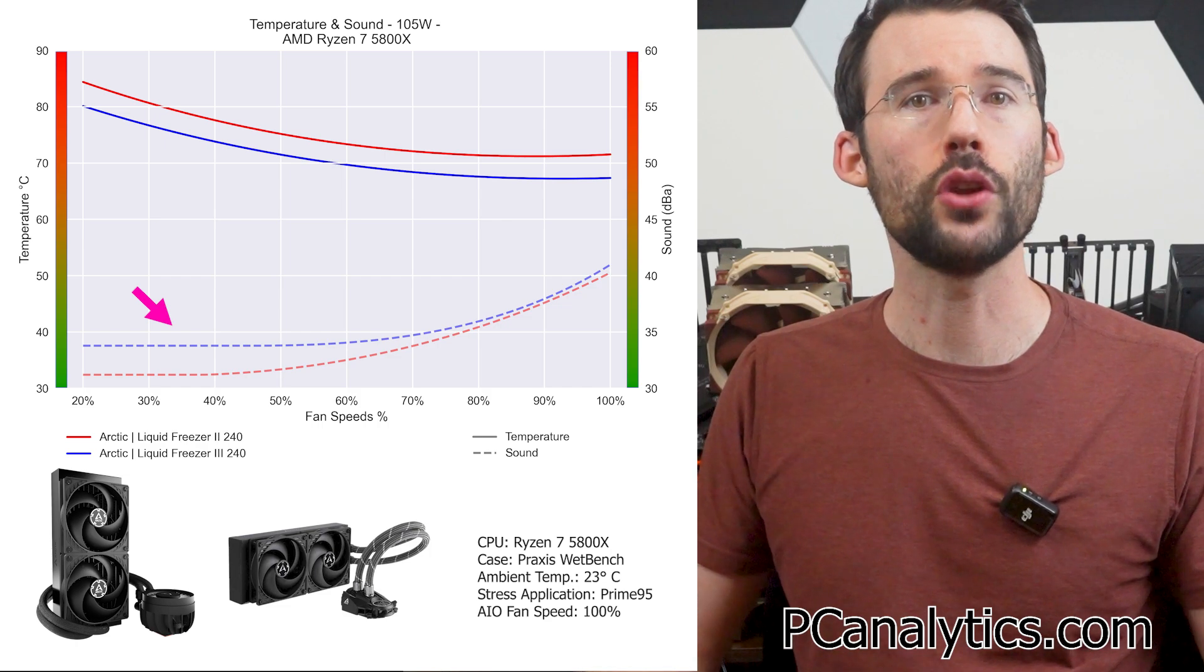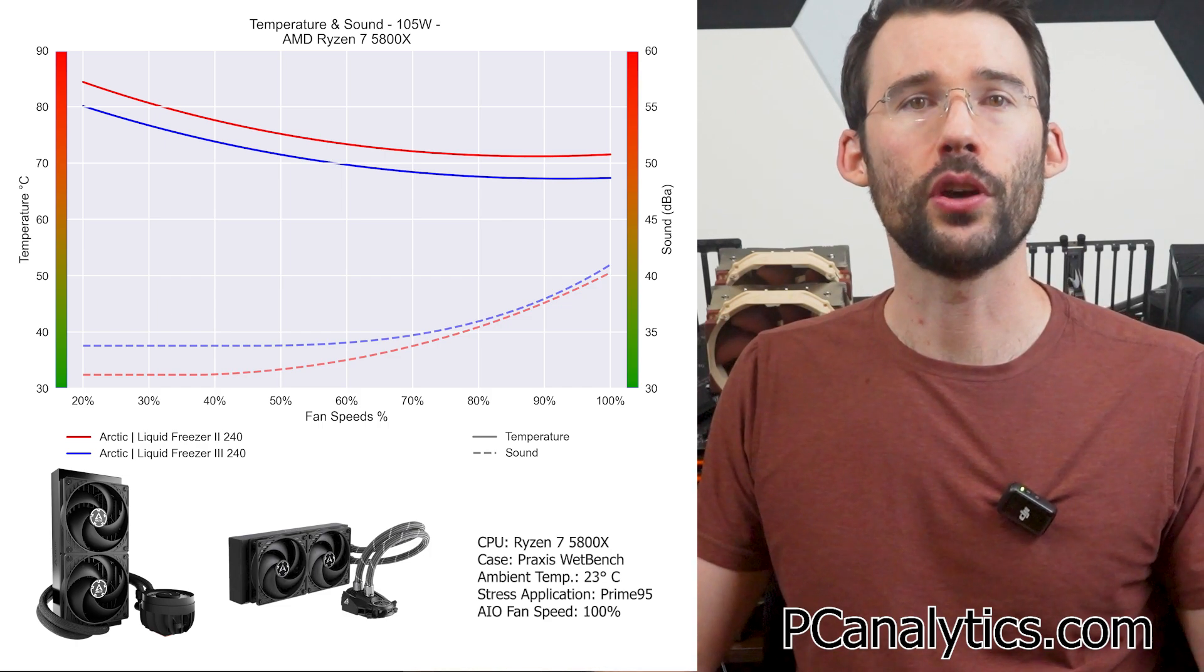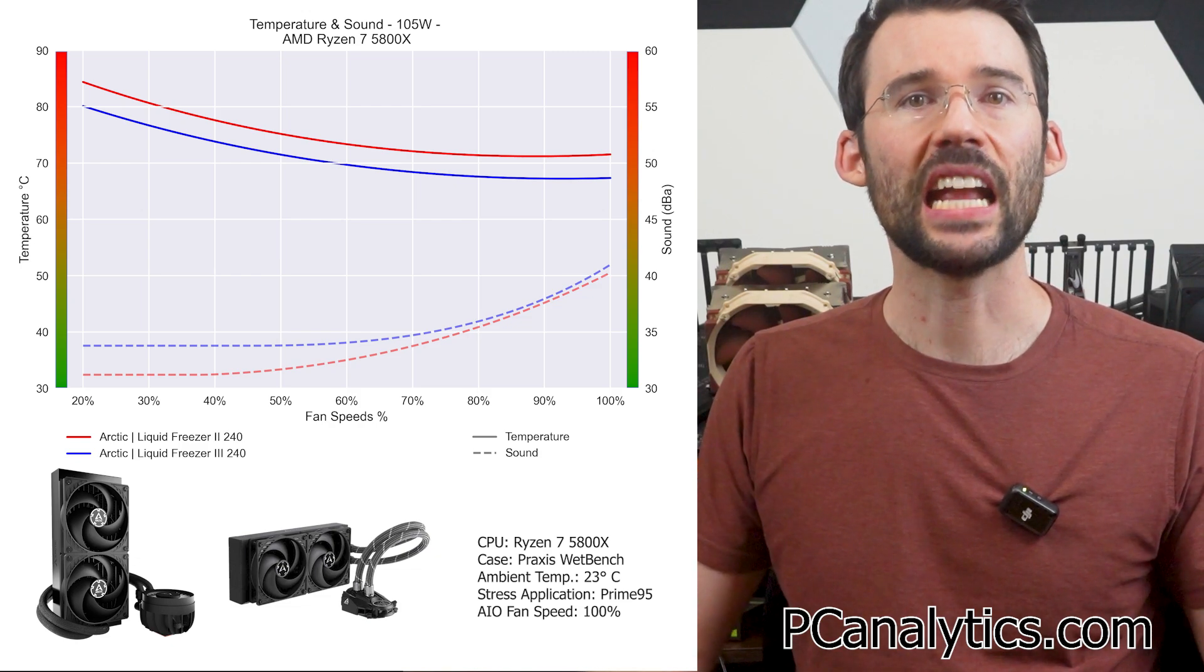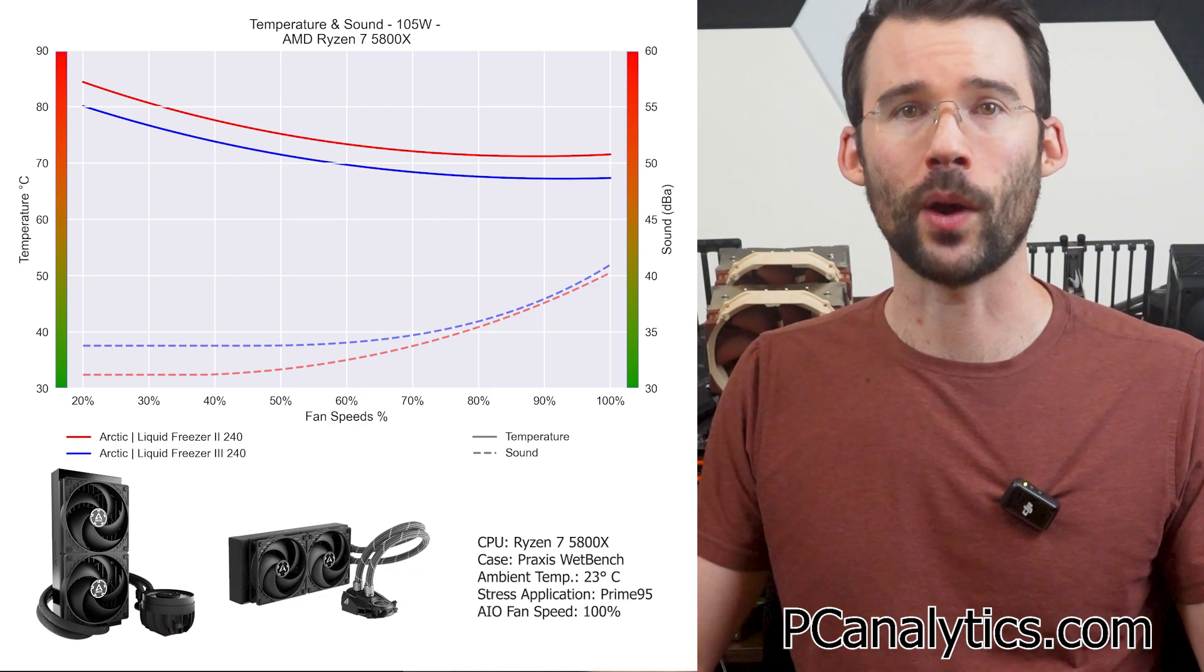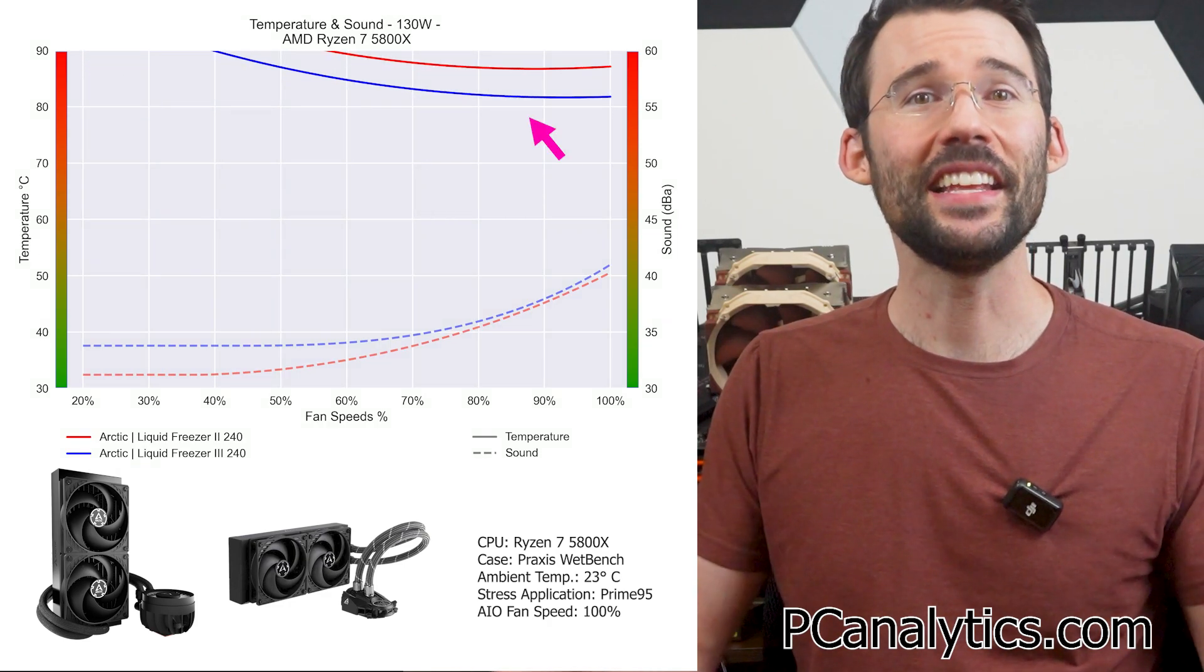Additionally, the Liquid Freezer 3 is noticeably louder across the board due to a louder pump. However, it's important to note that the pump on the Liquid Freezer 3 was set at 100% fan speed and can be reduced when high performance isn't required. When we push the CPU to overclock levels of 130 watts, we can see that the trend continues.